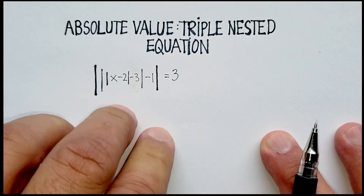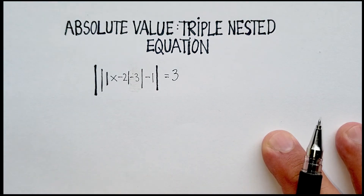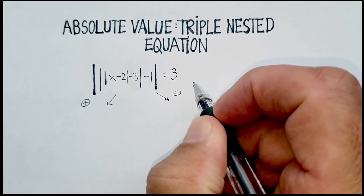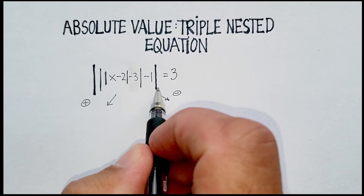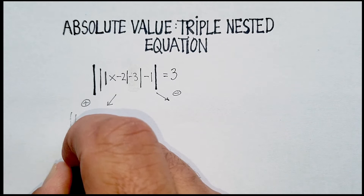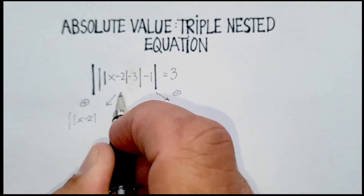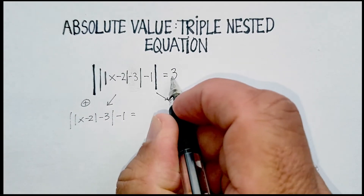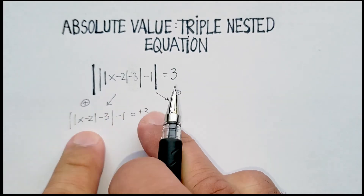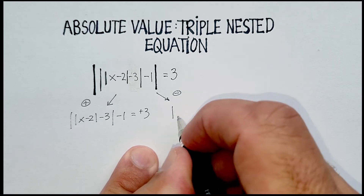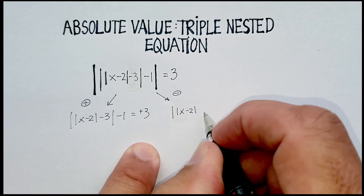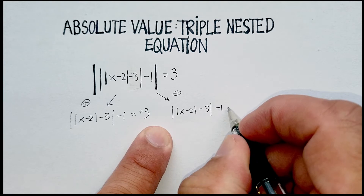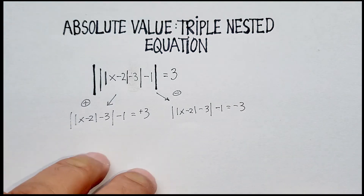Let's start off with this particular absolute value. We see that there's really nothing surrounding the absolute value itself, so we can get started with a positive and negative case. Here's my positive case on this side and here's my negative case on this side. I'm going to get rid of these two large absolute value brackets, and say: |x - 2| - |3| minus 1 equals the positive case. And over here I'm going to do the negative case: the absolute value of negative 2 inside the absolute value, minus 3, minus 1 is equal to the negative case.